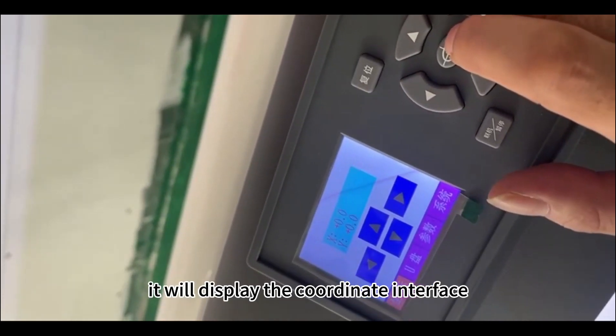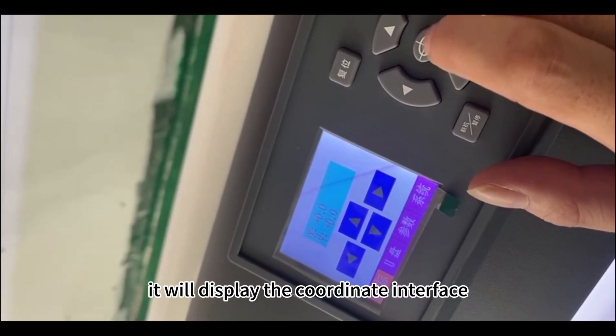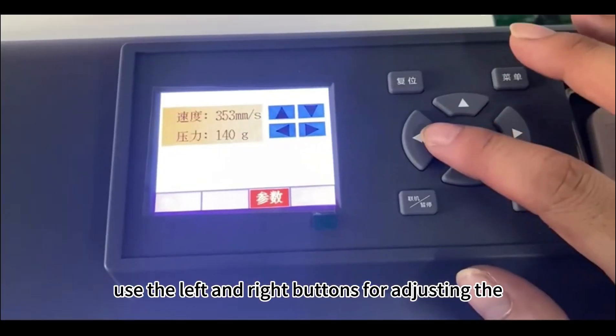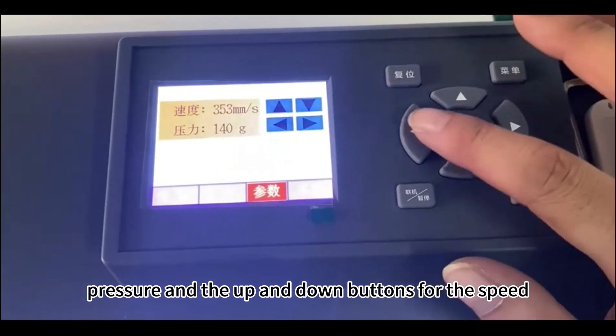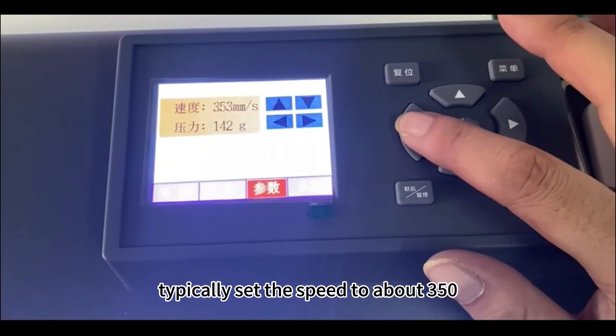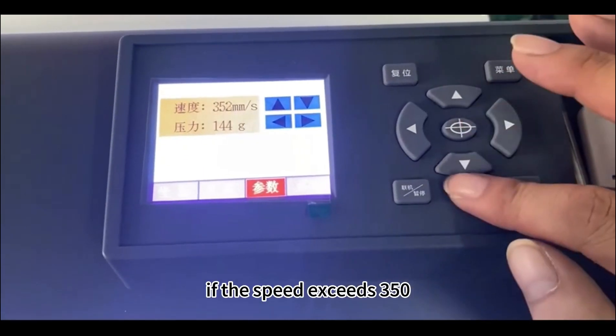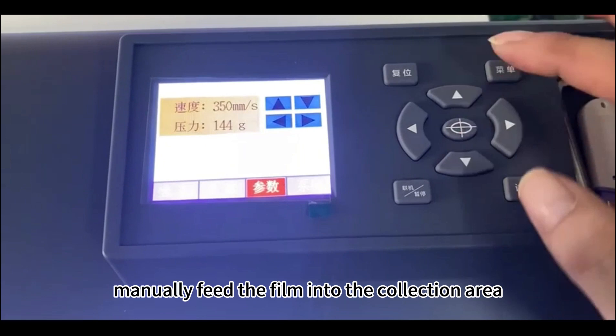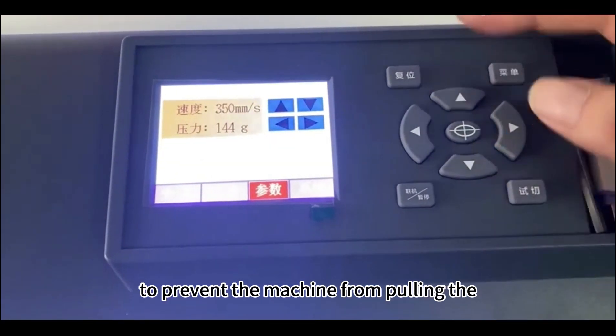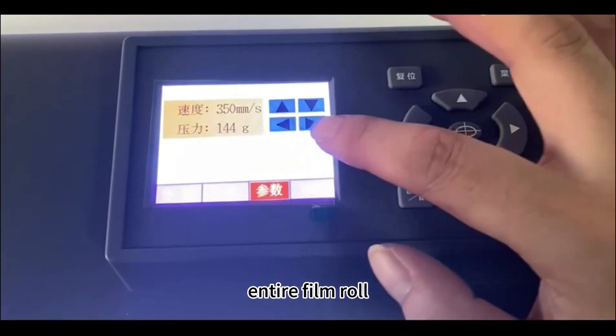When the machine starts, it will display the coordinate interface. Use the left and right buttons for adjusting the pressure and the up and down buttons for the speed. Typically set the speed to about 350. If the speed exceeds 350, manually feed the film into the collection area to prevent the machine from pulling the entire film roll.